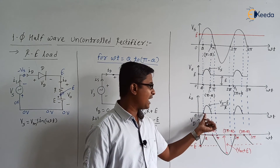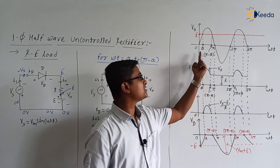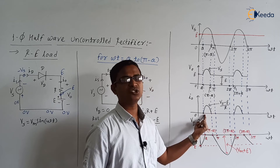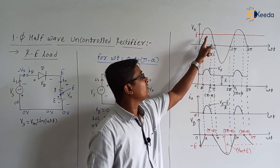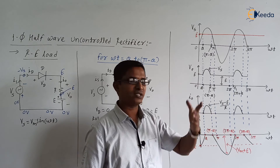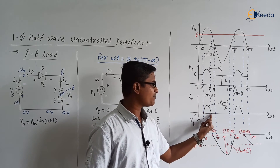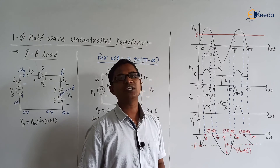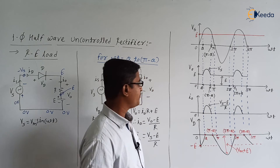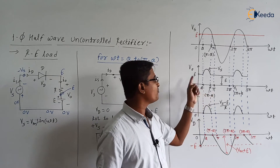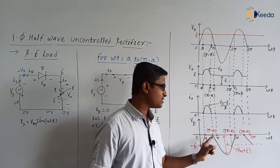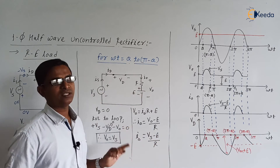At omega t equal to theta, Vs and E are both the same, so the difference is 0, giving I0 equal to 0. After theta, Vs is greater than E, so Vs minus E increases. At pi minus theta, both Vs and E become equal again, so Vs minus E becomes 0 and I0 returns to 0. So from theta to pi minus theta: V0 equals Vs, I0 equals (Vs minus E) divided by R, and Vd equals 0.